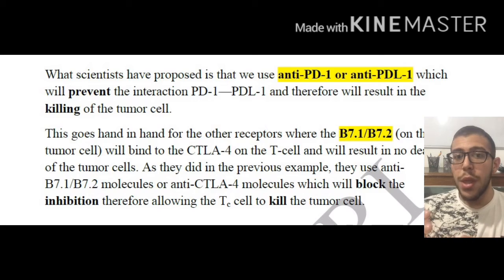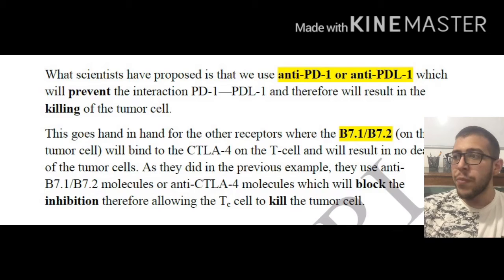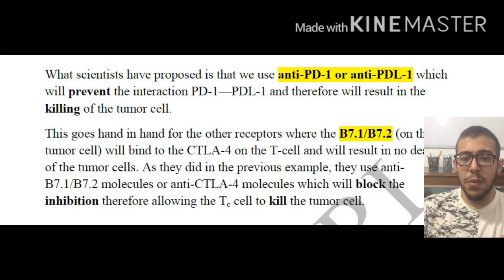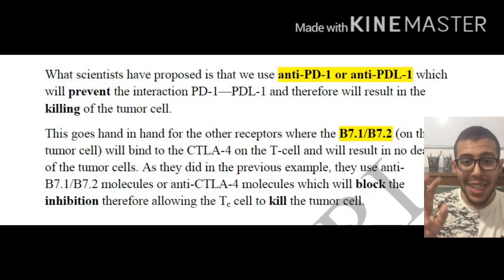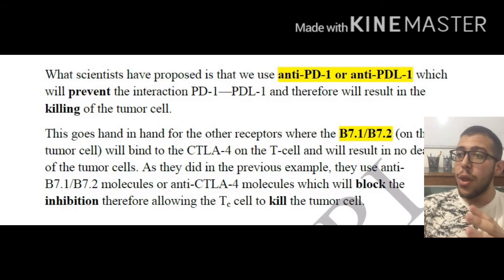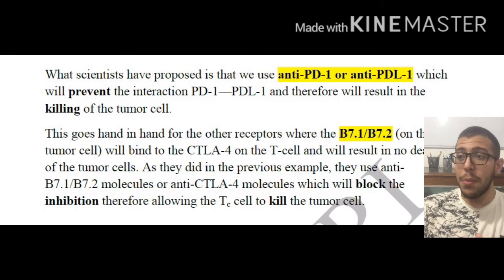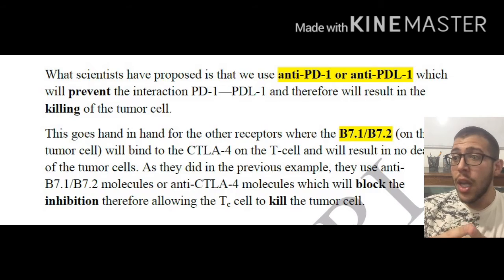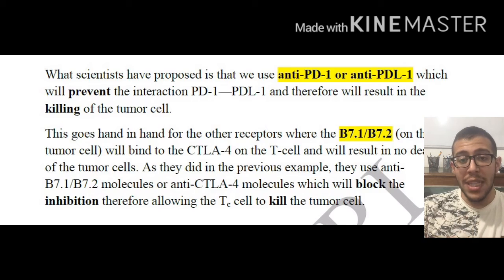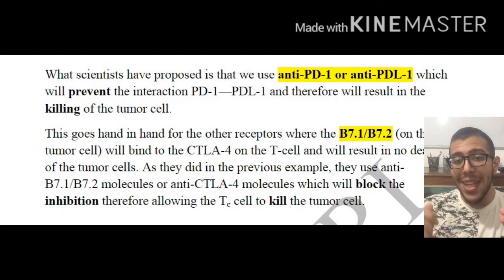This works hand in hand with the B7.1 and B7.2 receptors. These are co-stimulatory molecules on the tumor cells that bind to the CD28 family receptors — in this case CTLA4 on the T cell — and just like the PD1/PDL1 interaction, this results in no death of the tumor cell.